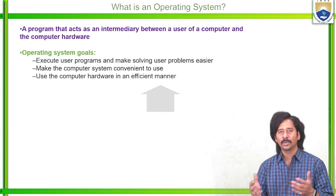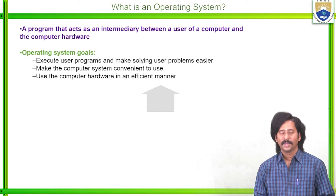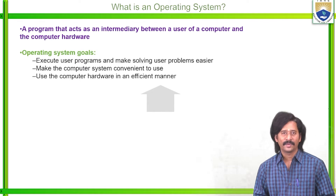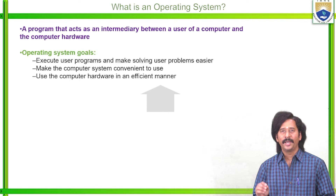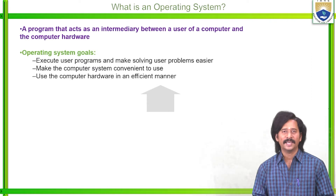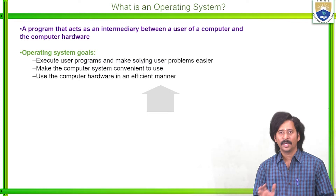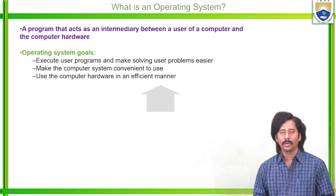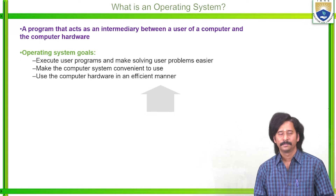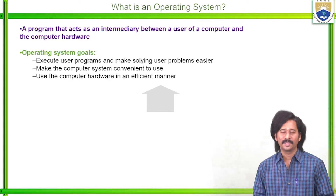What are the major goals of an operating system? First, whether it is a command-based or graphical-based operating system, it executes user programs and makes solving user problems easier. Users always interact with applications and not directly with computer hardware, so the operating system manages the execution path and helps solve problems in an easy manner.